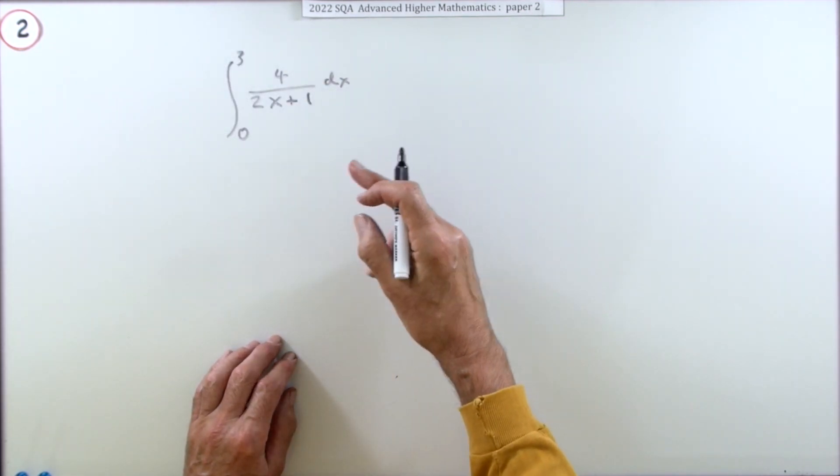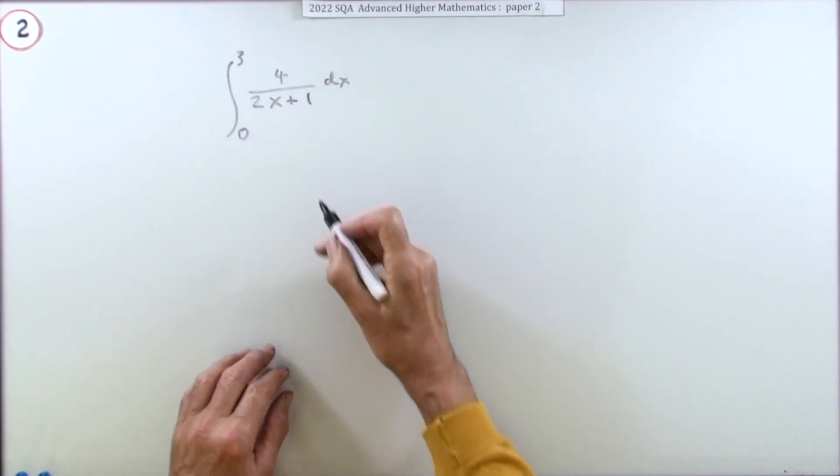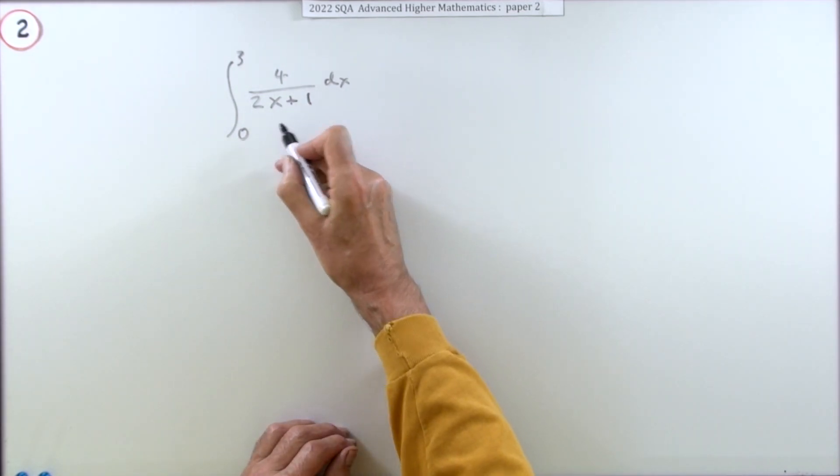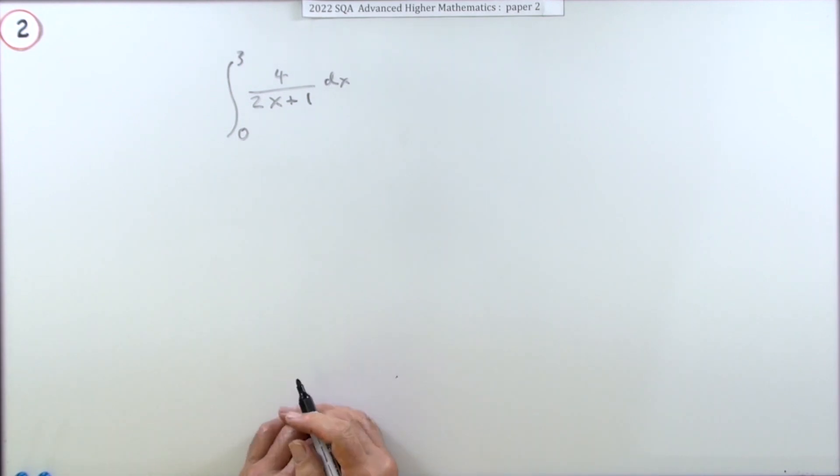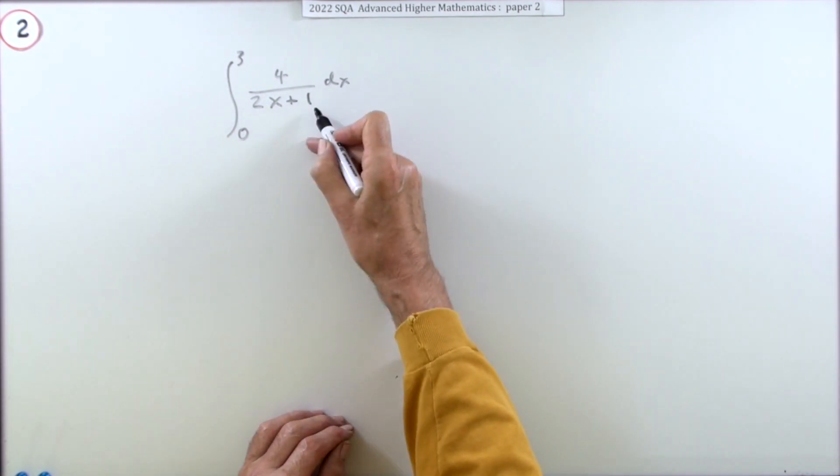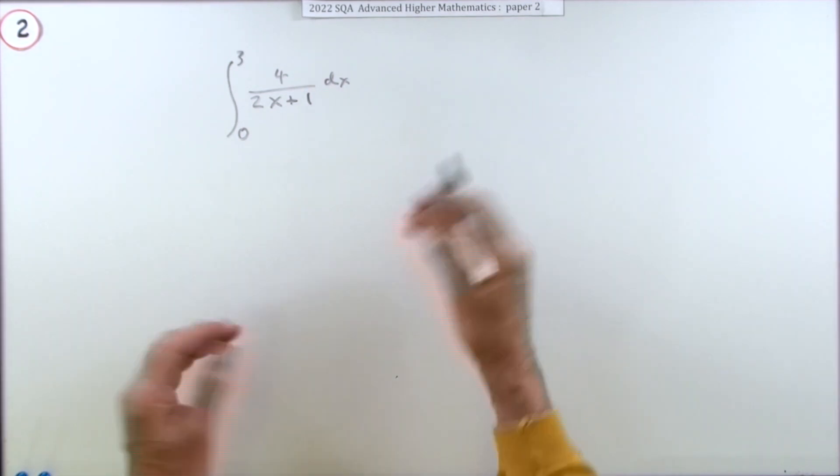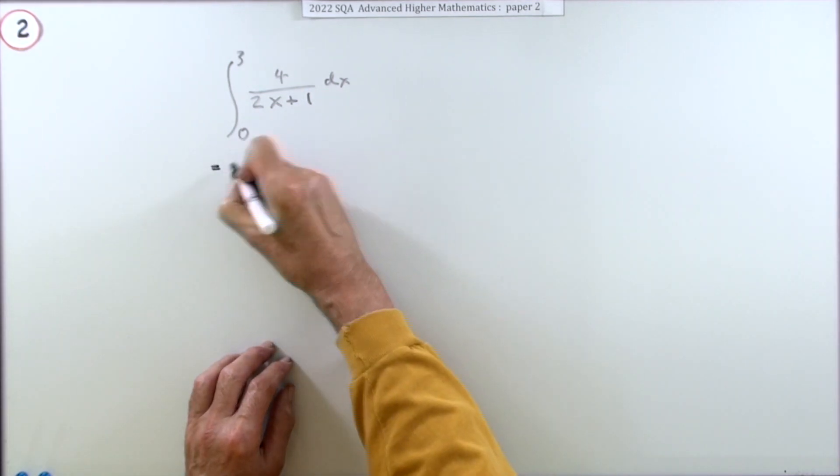That's immediately recognizable - this can be done by inspection because it's a known function just of a linear expression. That's quite clearly log, it's going to be the log of that denominator. Since it's linear, that means the derivative of the inner function is just a constant, so it doesn't affect anything.